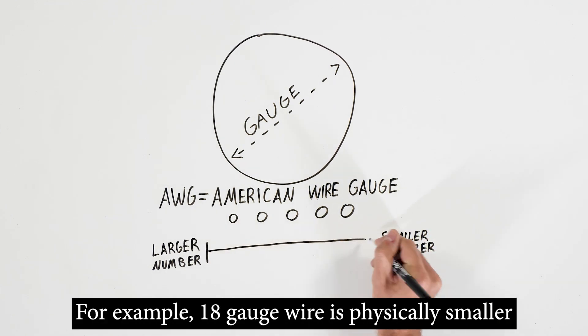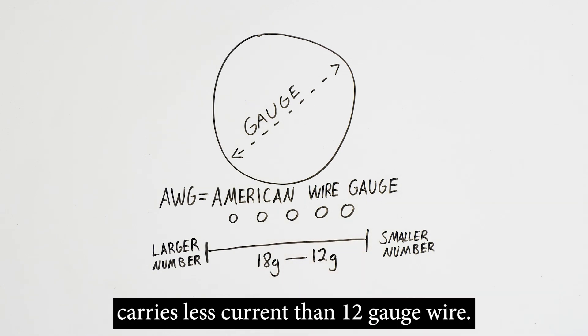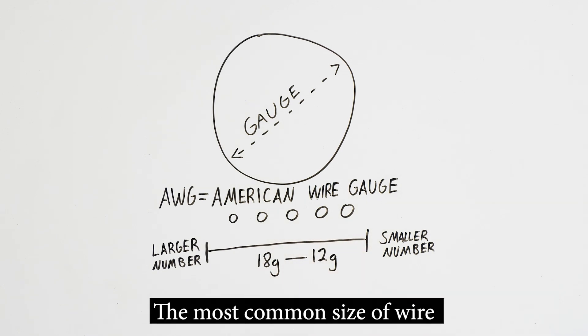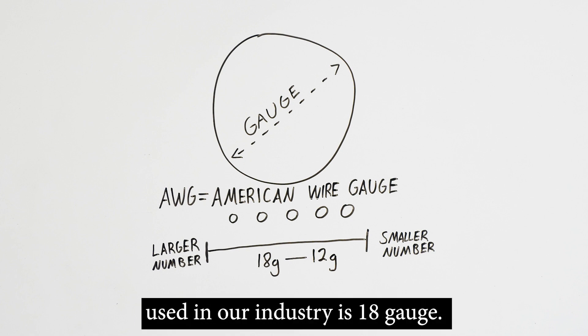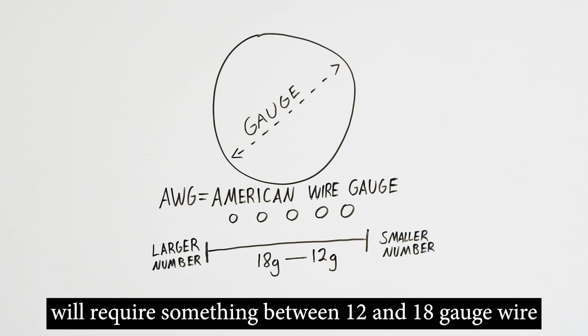For example, 18 gauge wire is physically smaller than 12 gauge wire, and therefore, 18 gauge wire carries less current than 12 gauge wire. The most common size of wire used in our industry is 18 gauge. Almost every electrified hardware installation will require something between 12 and 18 gauge wire.